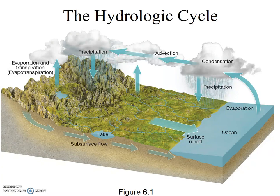As we study the hydrologic cycle, we'll see that there are pools where the water hangs out — like the oceans, surface water, and atmospheric moisture. And then there are also processes that move water from one pool to another, like evaporation, condensation, groundwater flow, and runoff.